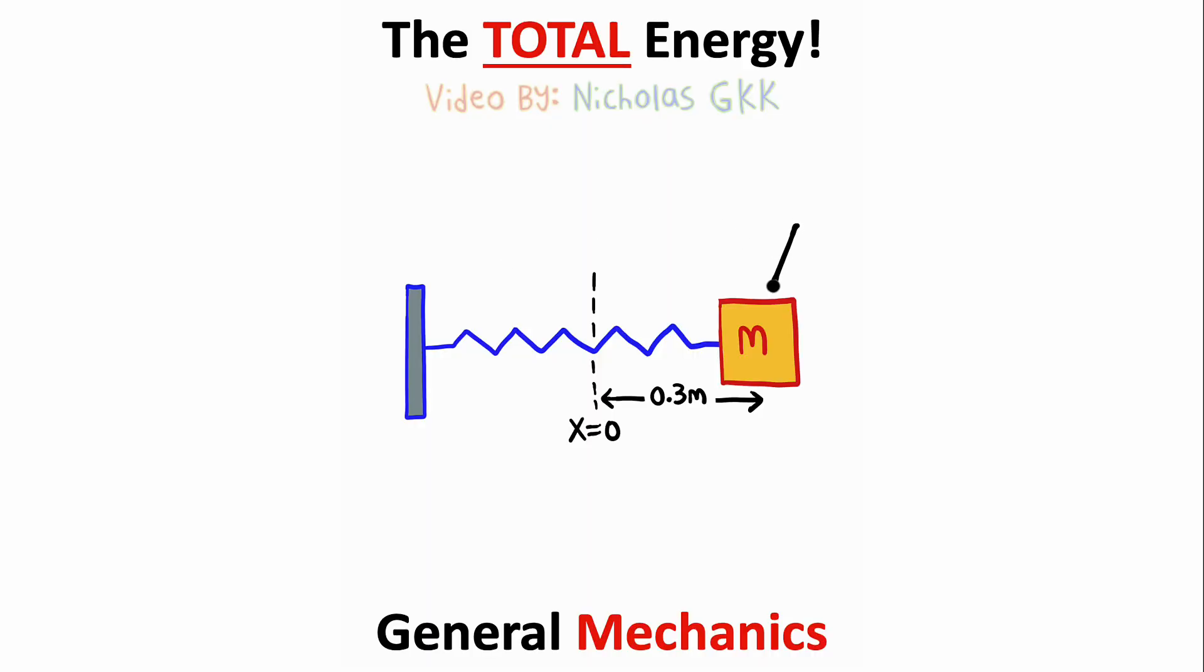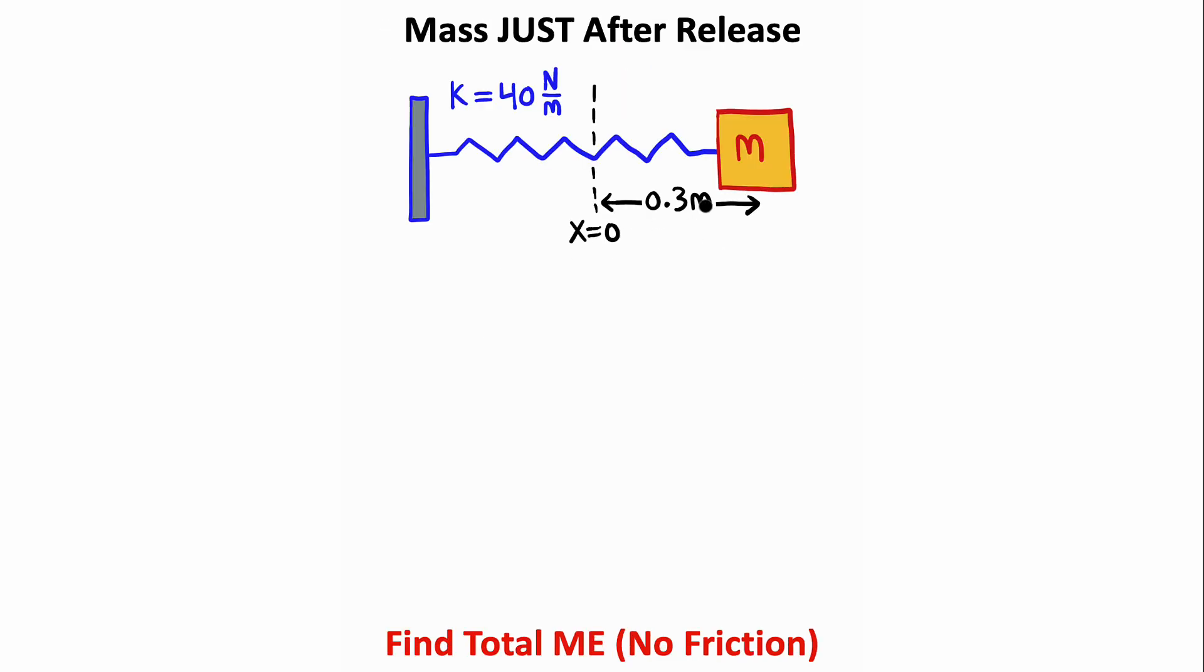Imagine that we have a block on the end of a spring. The spring has been stretched, and we're looking at the system just after the block was released. We want to calculate the total mechanical energy for this system, which is oscillating back and forth. Now when dealing with a mass spring system, the total mechanical energy is one-half the spring constant times the amplitude squared.